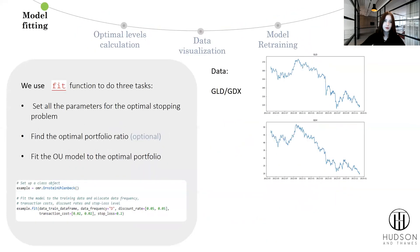Let's look deeper into the model fitting stage. We use the fit function to do three tasks. First, set all the parameters for the optimal stopping problem. Second, find the optimal portfolio ratio. And third, fit the OU model to the optimal portfolio.